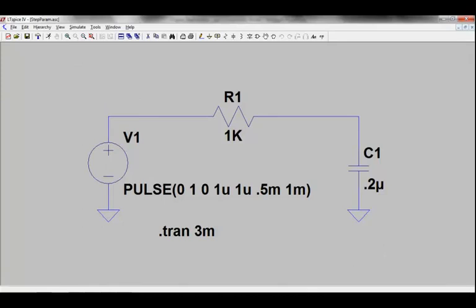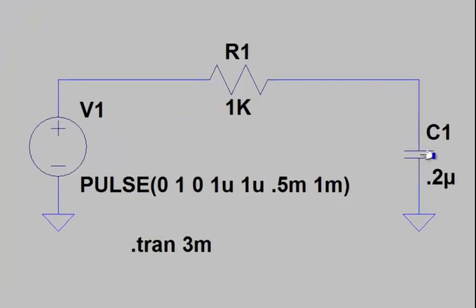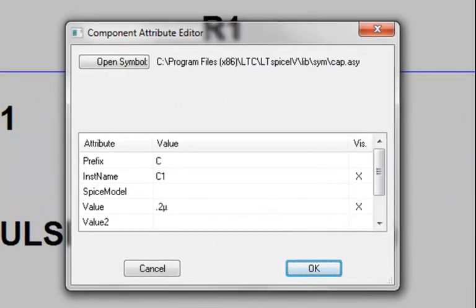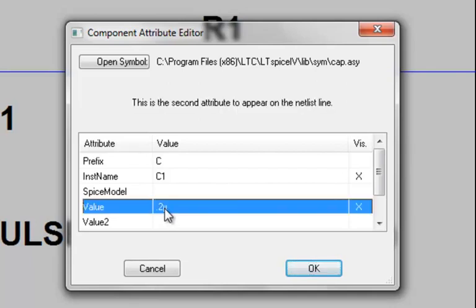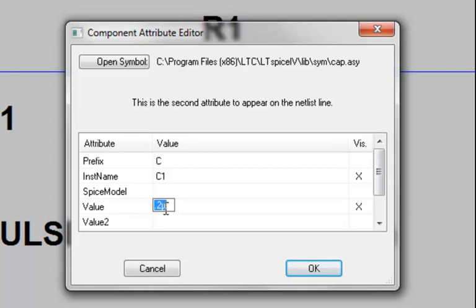To edit the capacitor's attributes, we need to do a control right-click over the capacitor element. That allows us now to edit the component attributes for that capacitor. And we're now going to go and replace the value of 0.2 micro with a user-defined variable, which in this case I've selected X, and we need to bracket it with the curly braces.